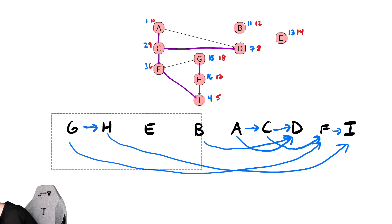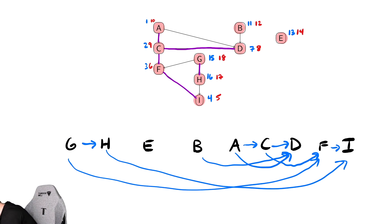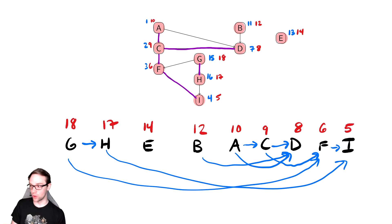And to emphasize what we did, we will quickly write down our finishing times to make sure we did this correctly. G was 18, H was 17, E was 14, B was 12, A was 10, C was 9, D was 8, F was 6, and I was 5. So, it's descending order of finishing time. That's all we're doing. It's called the topological sort of the graph. You may get edges that cross, but we have this nice flow from left to right.